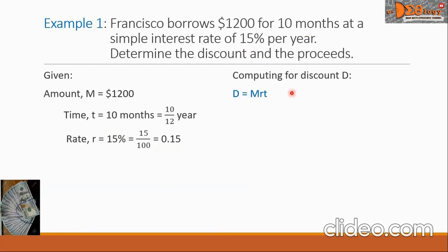Now we are ready for the computation of discount D. Our formula is D equals the product of M times R times T. Doing the substitution now, we will have the M is now changed into 1,200, our R is 0.15, and the time is 10 over 12. Let us use our calculator to simplify the product, and we will have 150. This is the discount.